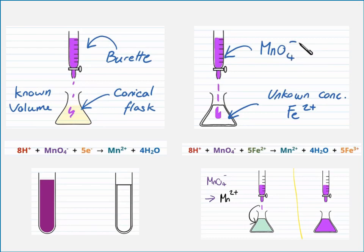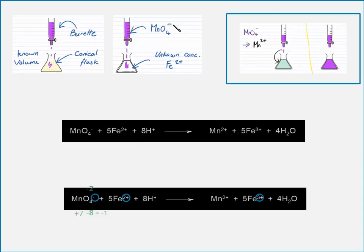If we have purple permanganate in the burette and a colorless solution inside the conical flask, as we begin the titration, we observe a reduction in our permanganate solution. Since the solution inside the conical flask is colorless, after the excess drop of permanganate, we will observe a purple color solution. We will observe this endpoint as a colored purple solution.